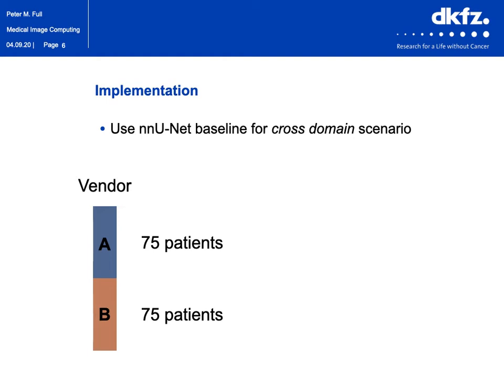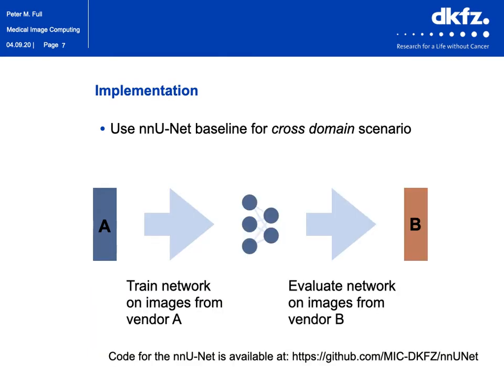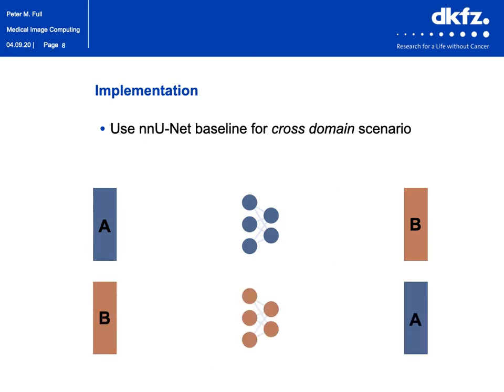In order to study segmentation robustness on previously unseen domains, we split the training data — which comprises images from two different scanners — in half. We'll refer to these scanners as scanner A and B, and both data splits had 75 patients. This allowed us to train our network in a cross-domain scenario, where during training only vendor A data was available and evaluation was done on images from vendor B, and vice versa.